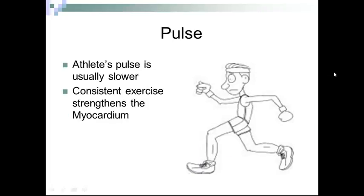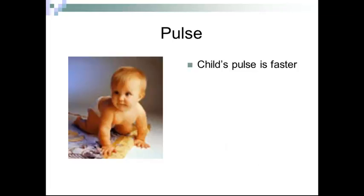The pulse in athletes will be slower — many marathon runners will have a pulse of 40, which is normal for that particular patient but not for the average person. The reason those pulse rates are lower is that consistent exercise strengthens the myocardium so more blood is pushed out, and there is less need for the body to circulate oxygenated blood. The pulse is also faster in children depending on age — the younger you are, the faster your pulse rate. As we age, our pulse decreases.